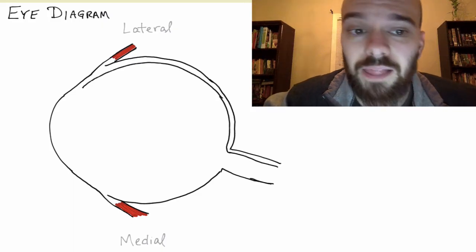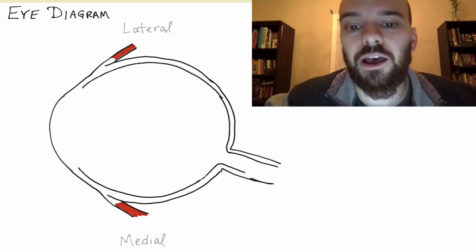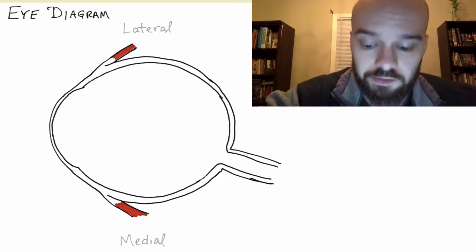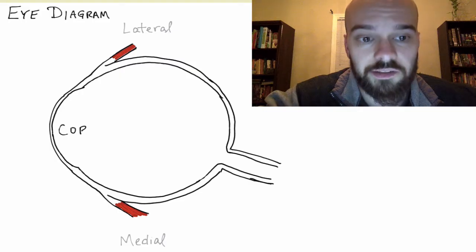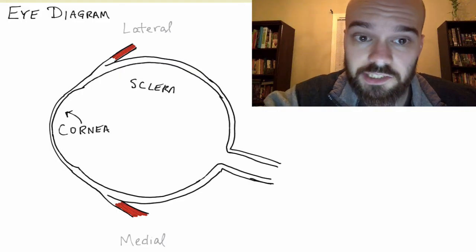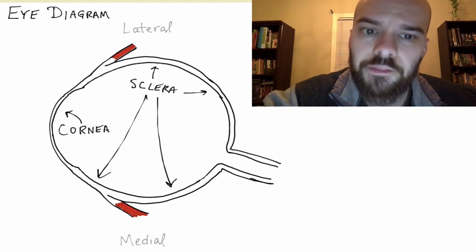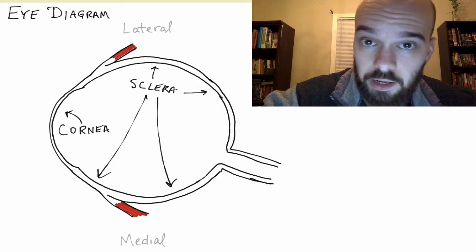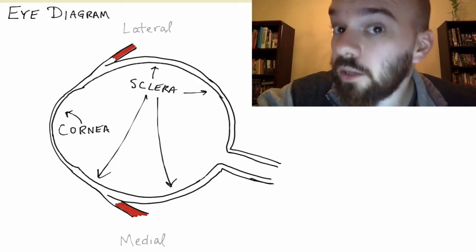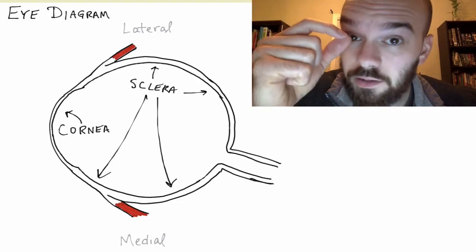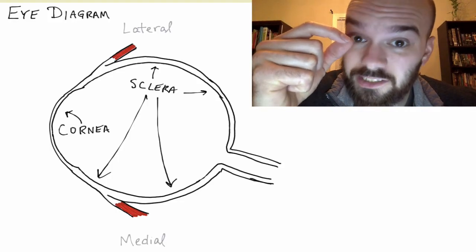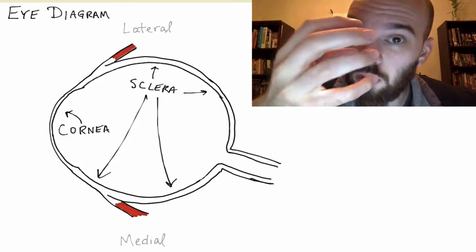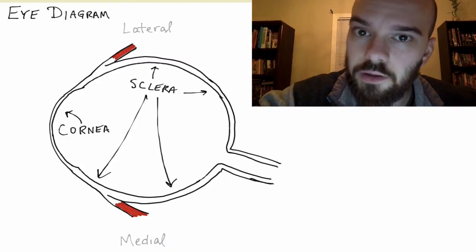Next we're going to draw a line around the eye to outline two things: one is the cornea and the other is the sclera. The sclera is the white of your eye. Whenever you look at an eye, that white part — the sclera — is going to be a protective layer that's going to hold all of the contents of the eye in.